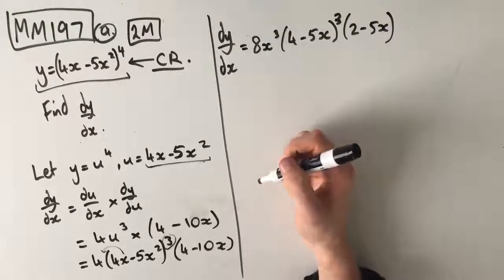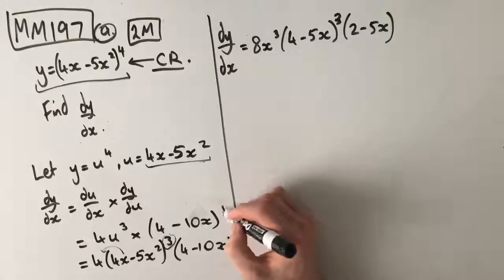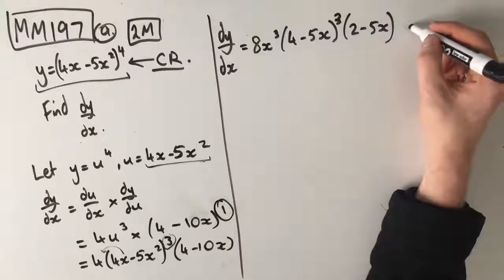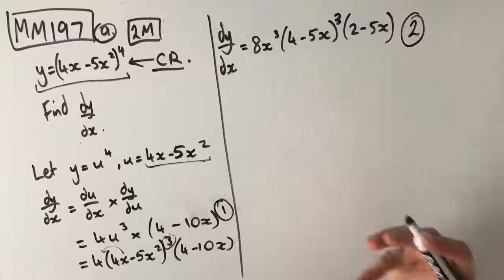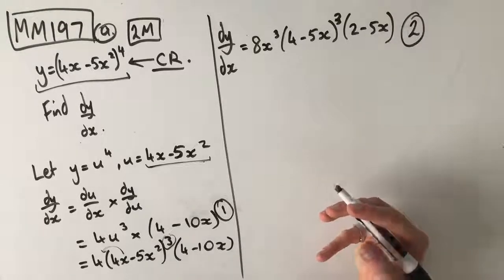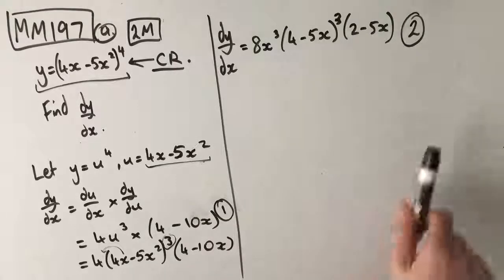Our first mark comes when we recognize that it's a chain rule and we start applying that, so that's our first mark here. And then our second mark is here where we actually get the right answer. So that's part A. Let's move on to part B.